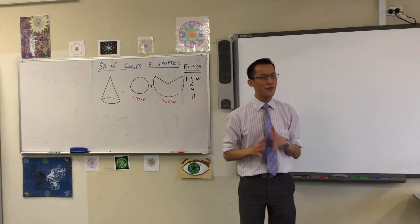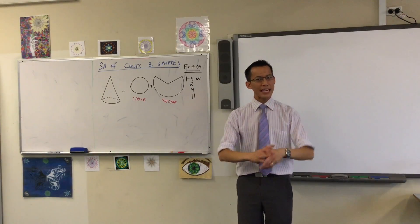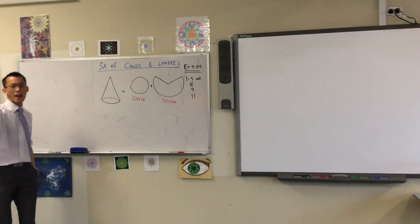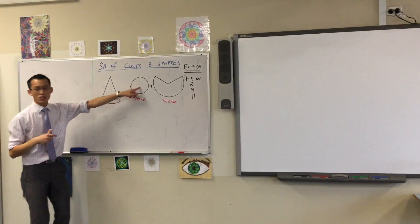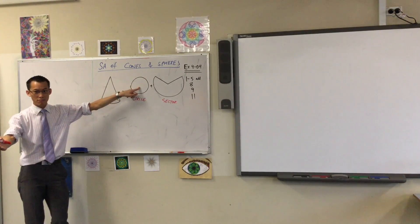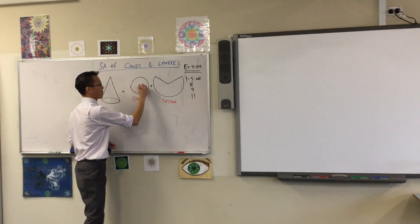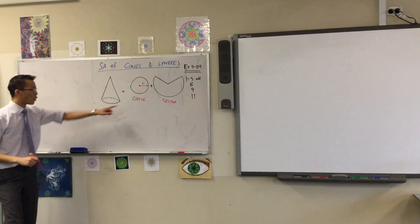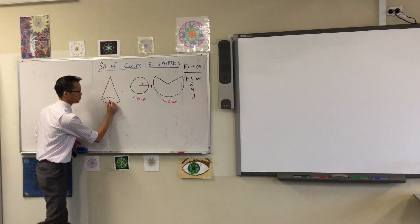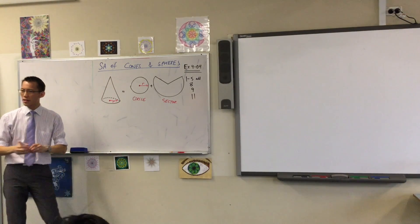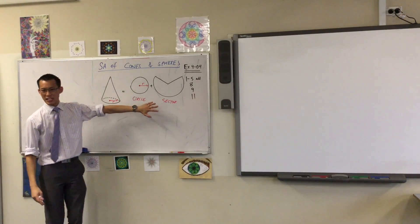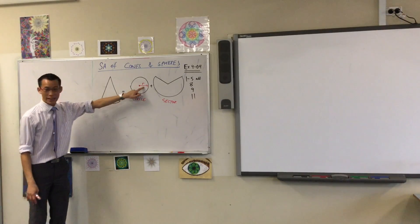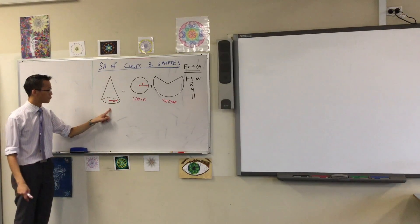Now to work out the surface area of this cone, just like every other area, we need two measurements. The first one is the most obvious one - you did the area of a circle in our review this morning. The area of a circle only requires a single measurement, namely the radius. On your circle, I'd like you to add that radius in. I'd also like you to put it in on the cone. It's really important that you can map back and forth between this 2D representation and what's happening in three dimensions. So this radius and this radius are the same length.